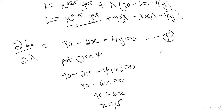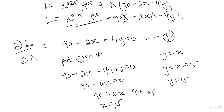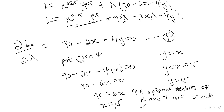And since y equals x, y equals 15 as well. So the optimal values of x and y are 15 units and 15 units respectively. This brings us to the end of the series of videos on consumer behavior. Kindly like, comment, share, and most importantly subscribe to the channel for more content. Thank you very much for staying with us throughout consumer behavior.